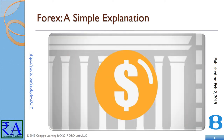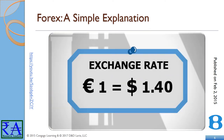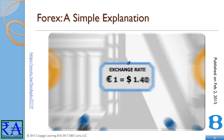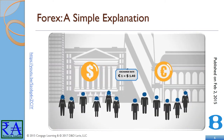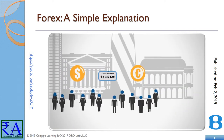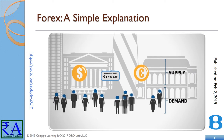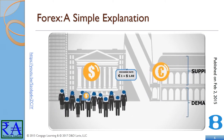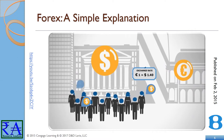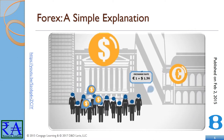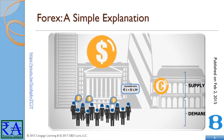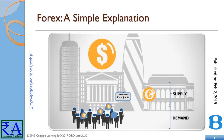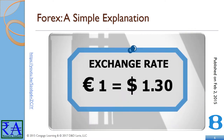When currencies are exchanged, they have a certain price — the exchange rate. As in any market, the price of a currency is determined by the law of supply and demand. If there are many people or companies that want to change euros into dollars, the price of the dollar will rise against the euro, and so the exchange rate will change.